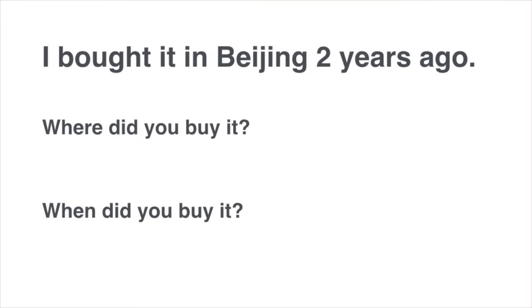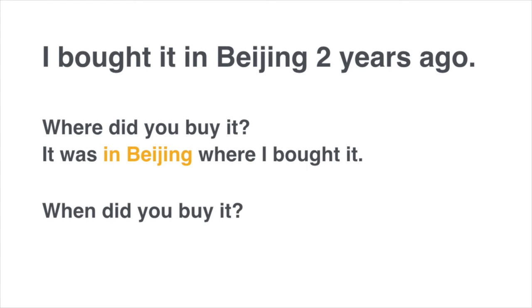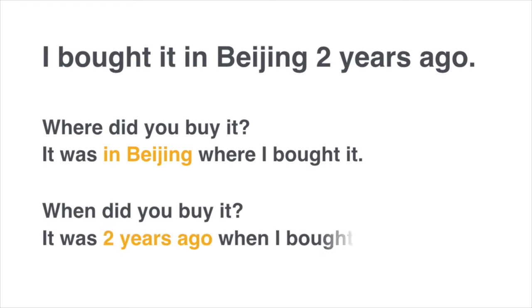Welcome back to ChineseZeroToHero.com. Let's take a look at a new grammar point. Let's say that you bought something really nice in Beijing two years ago. Somebody comes up to you and asks where did you buy it — you'd say 'in Beijing,' or specifically, 'it was in Beijing where I bought it.' And if people ask when did you buy it, you'd say 'it was two years ago when I bought it.' These are questions asking for specifics about the past, and these are answers giving specific details about a past activity.